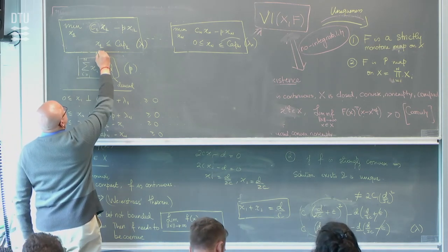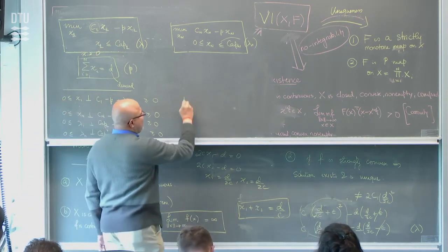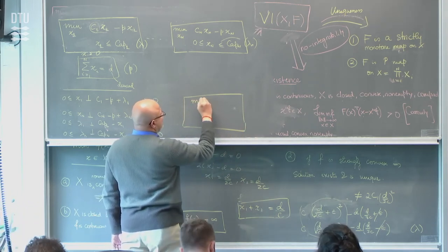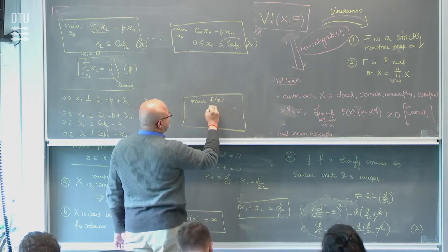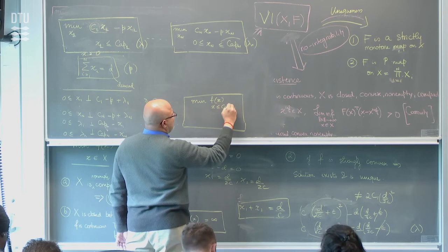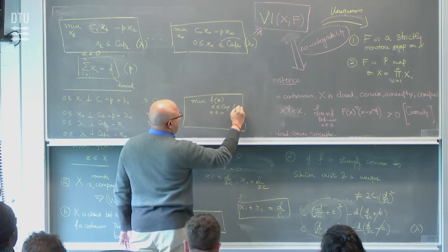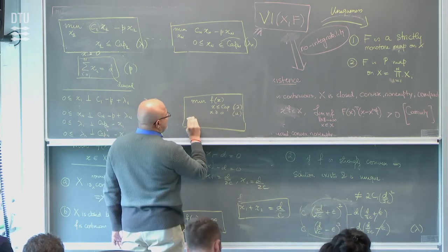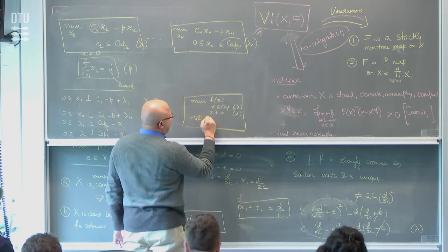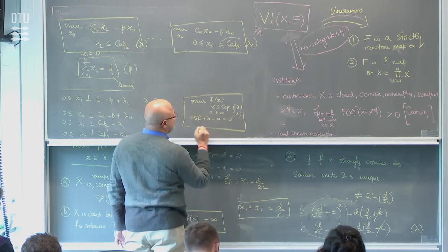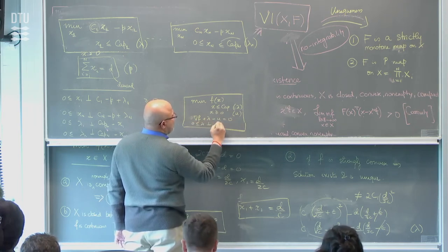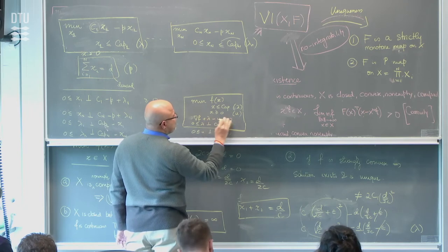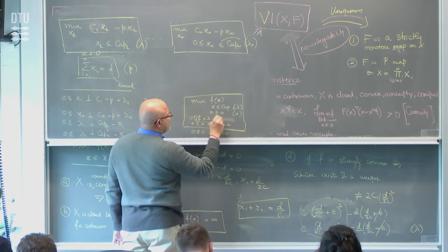The way it works is: when we had the constraint x less than capacity and x greater than 0, with multipliers lambda and u, writing down KKT conditions gives gradient of f plus lambda minus u equals 0, lambda orthogonal to cap minus x, and u orthogonal to x non-negative. But u is exactly this term, so I can eliminate u and substitute it directly.